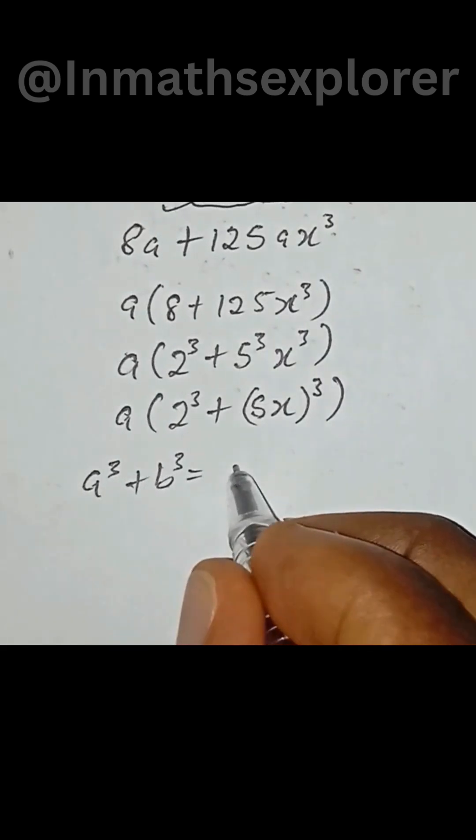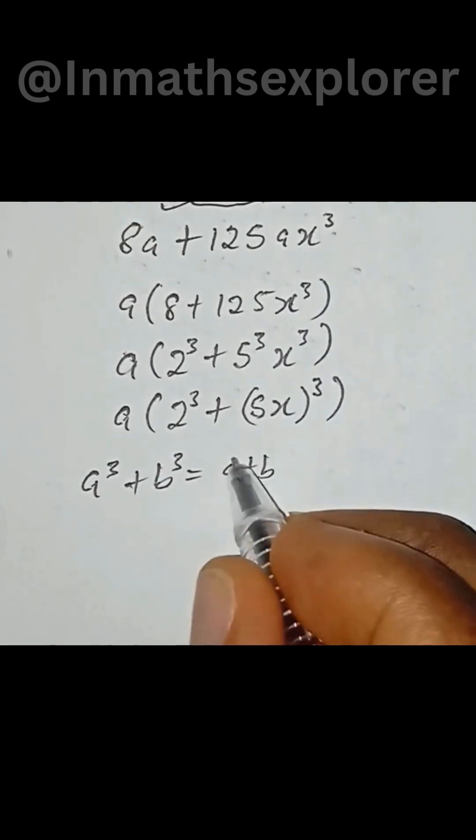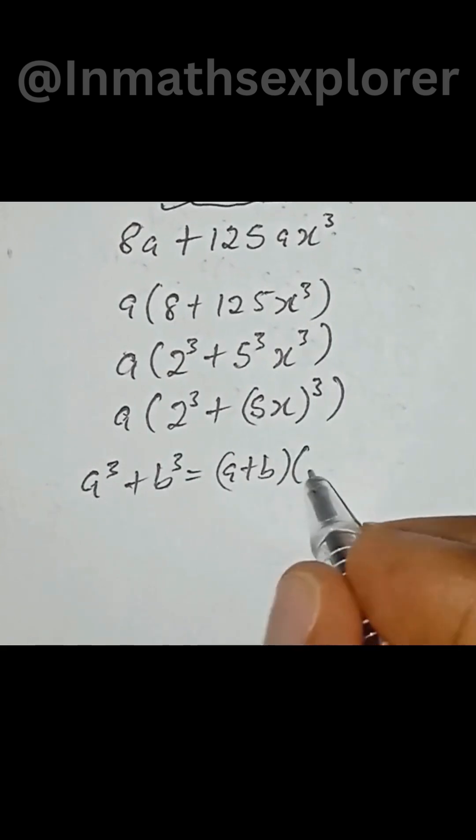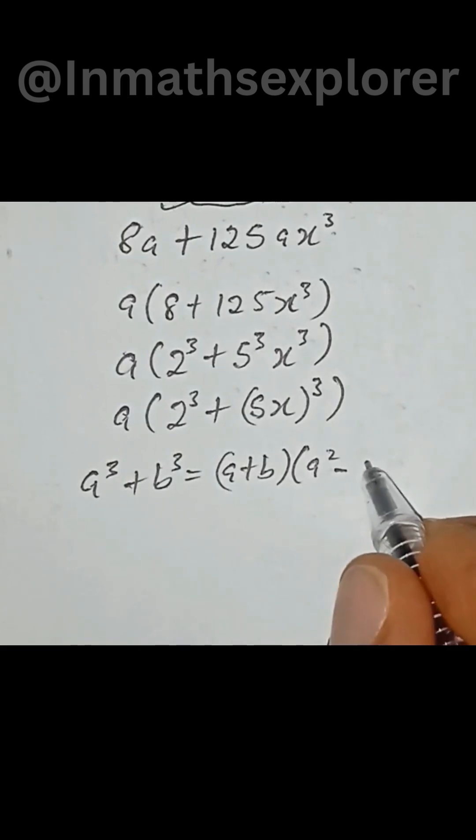This is equal to a plus b into brackets then a to the power of 2 minus ab plus b square.